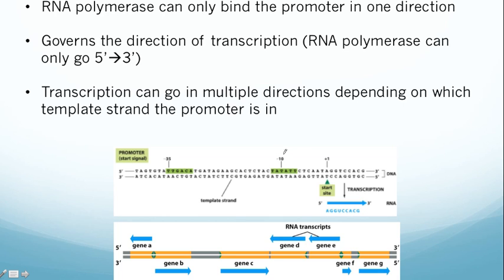In bacterial promoters, the conserved sequences are located 10 nucleotides upstream and 35 nucleotides upstream from the start site. These promoters govern where the RNA polymerase will bind. Because they're not symmetrical, depending on which strand the promoters are on, they actually govern which direction the RNA polymerase can go. RNA polymerase will always synthesize mRNA in the 5' to 3' direction, but it can use either the bottom strand or the top strand as a template.